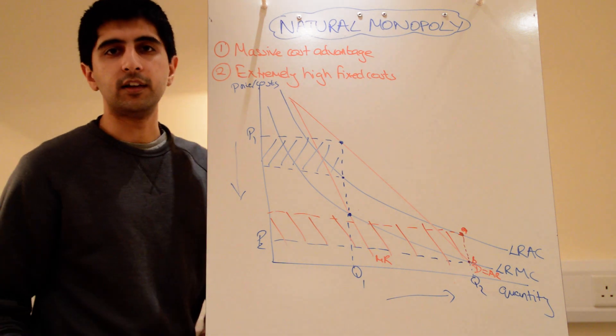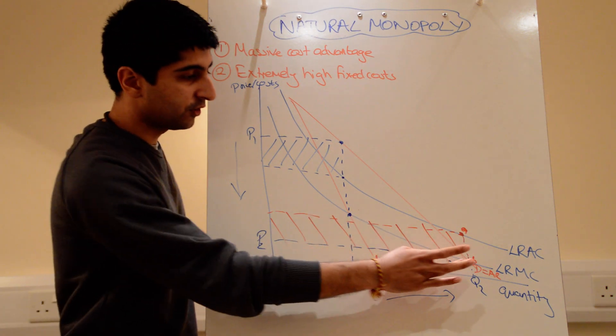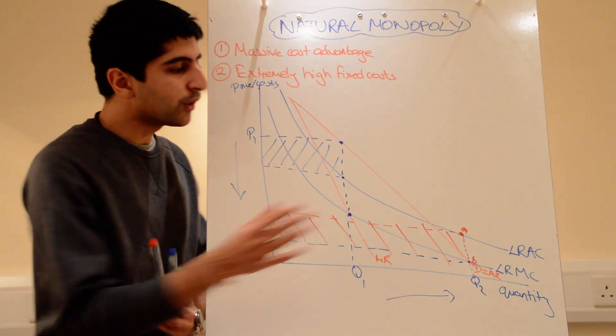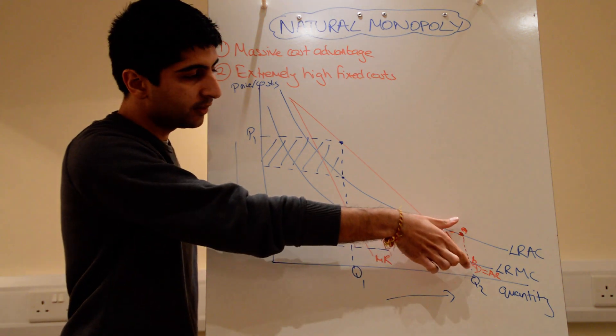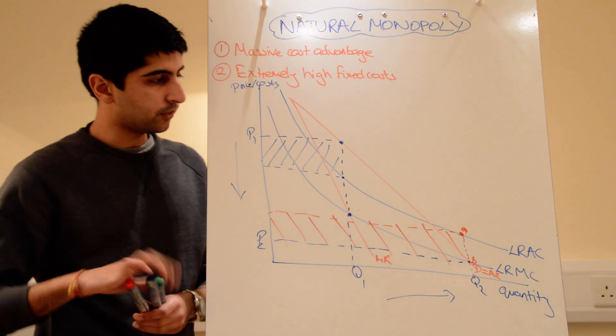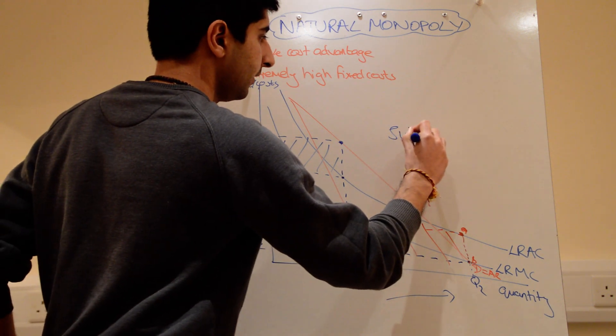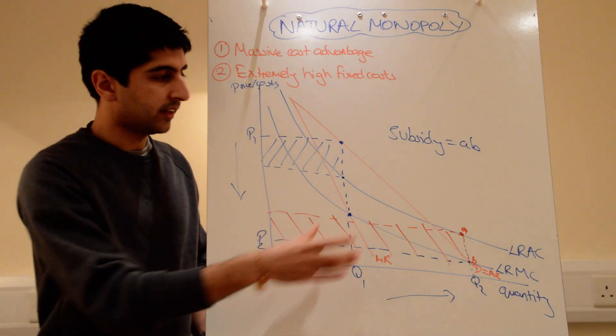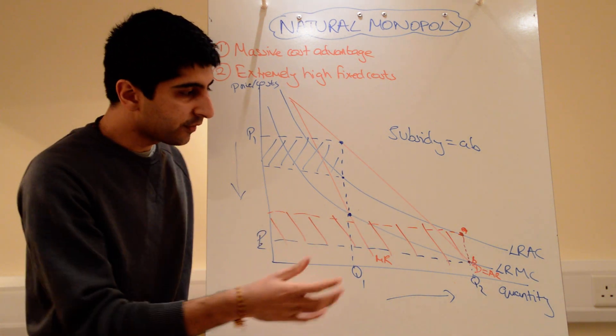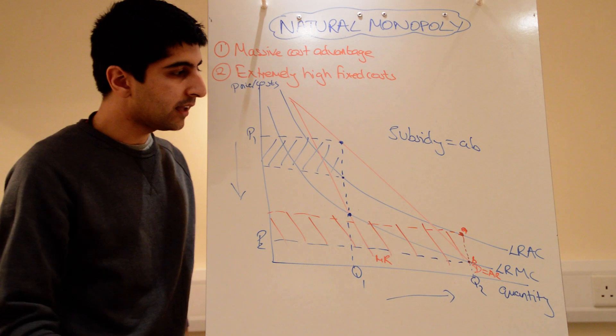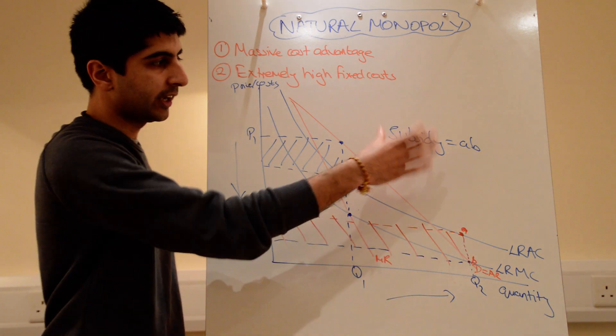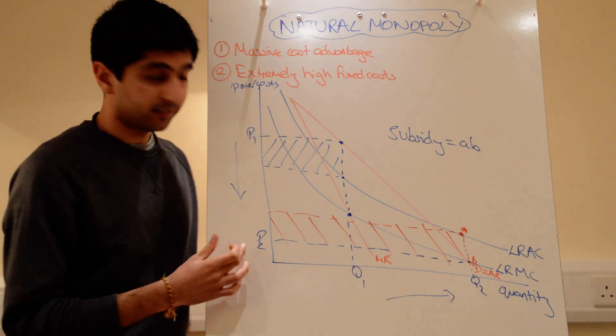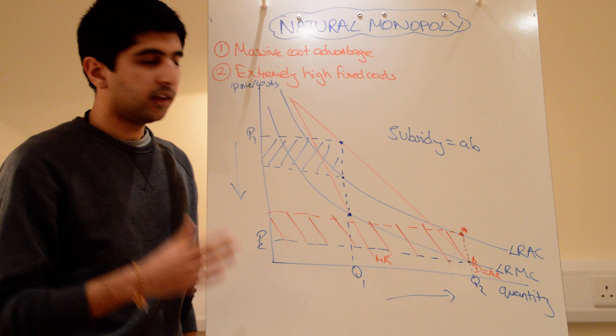So, the government say, fine, we appreciate that what we've done by forcing you to produce here, P equals MC, you're making a loss that's not good. We'll subsidize you on the loss. So, a unit subsidy is given of AB. A subsidy is given equal to AB, which then subsidizes any losses being made. And so, all of a sudden now, normal profits will be being made. Average revenue will now equal average cost when you take into account the subsidy. And the firm is producing still at the same level quantity. At the same price level too. All is good.